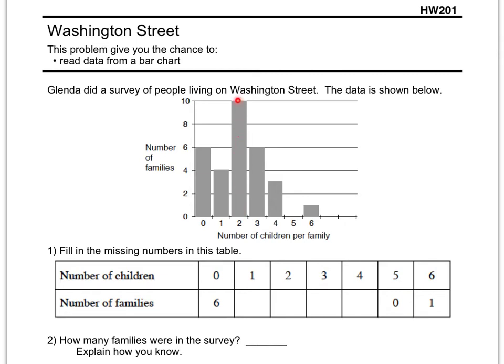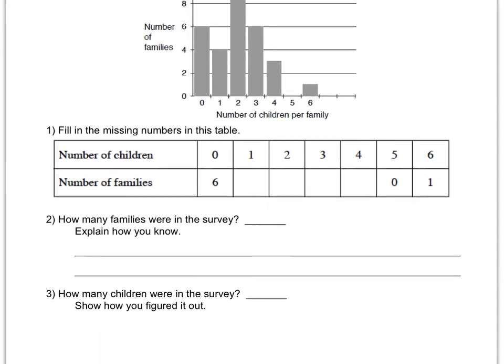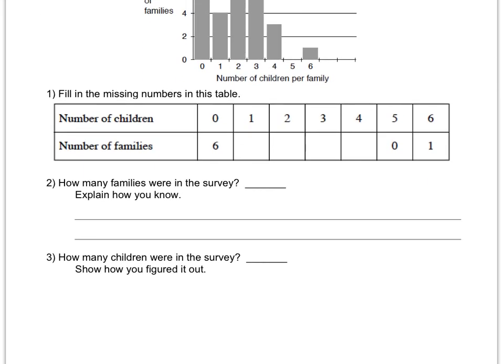Two children. There's this many families that have two children on Washington Street. This many families have three children on Washington Street. This many families have four children on Washington Street. It looks like no families have five children on Washington Street. And it looks like one has six. And those are already filled in for you. So just use that graph to fill in the actual values.